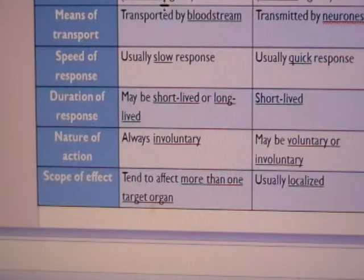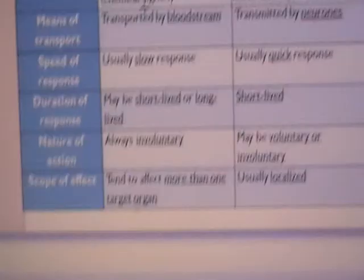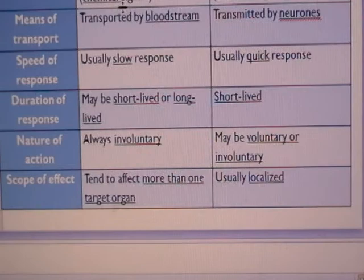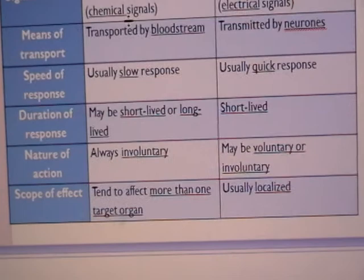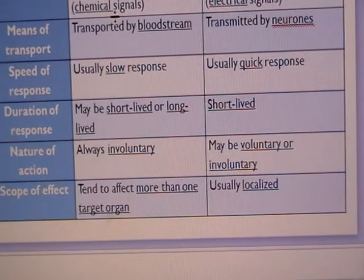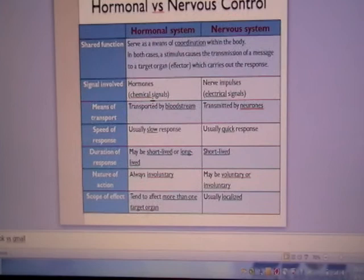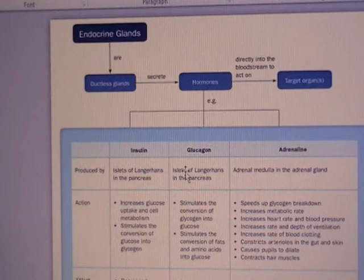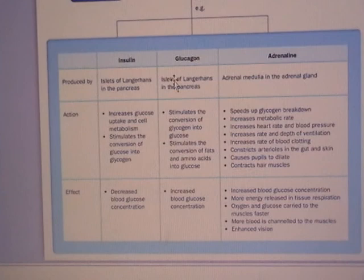Lastly, for the scope of effect: in the hormonal system you can target more than one target organ, as shown in the analogy. For the nervous system it is usually localized — when the impulse is sent via the motor neuron to the iris muscles, only those muscles are affected; your arm muscles and leg muscles will not be affected. You can also take a look at the mind map at home. This is a recap for hormones — thank you.